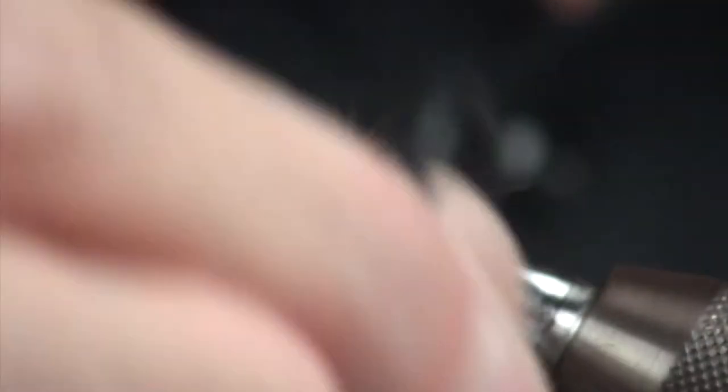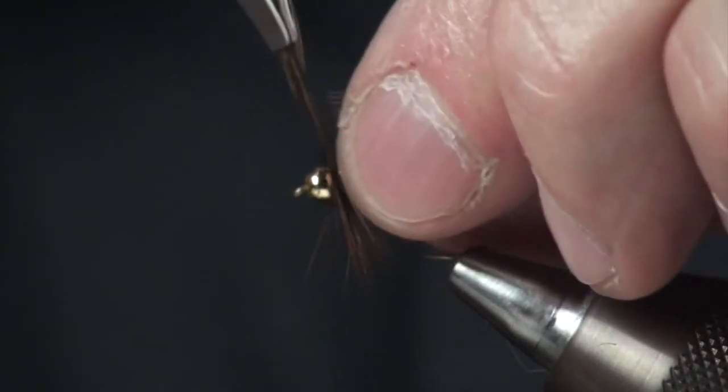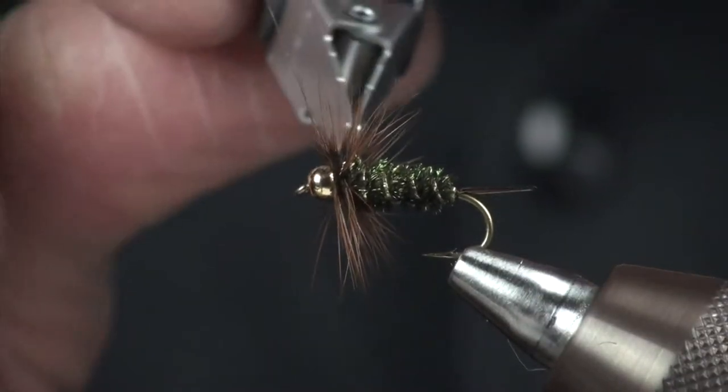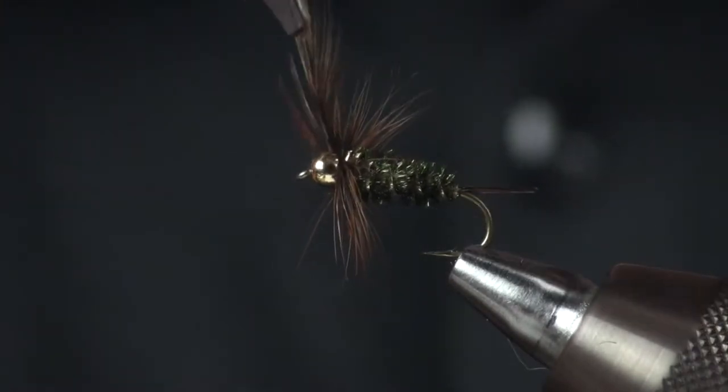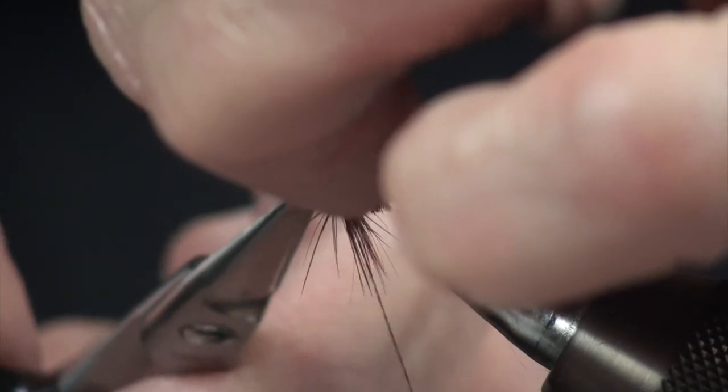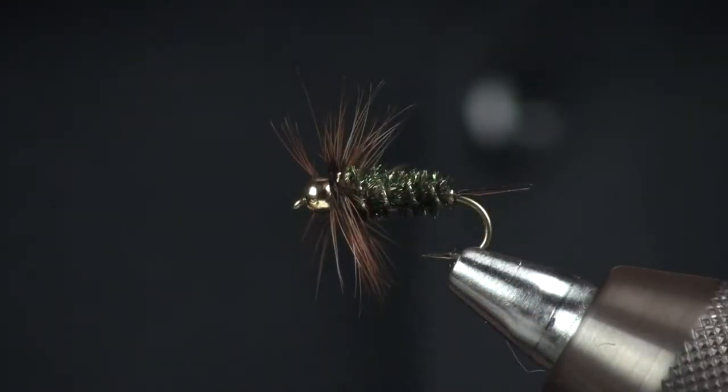Take a wrap. Fold them. Go right up to the bead. You can do two, three wraps. Whatever you prefer. Then I can cut this tip off.